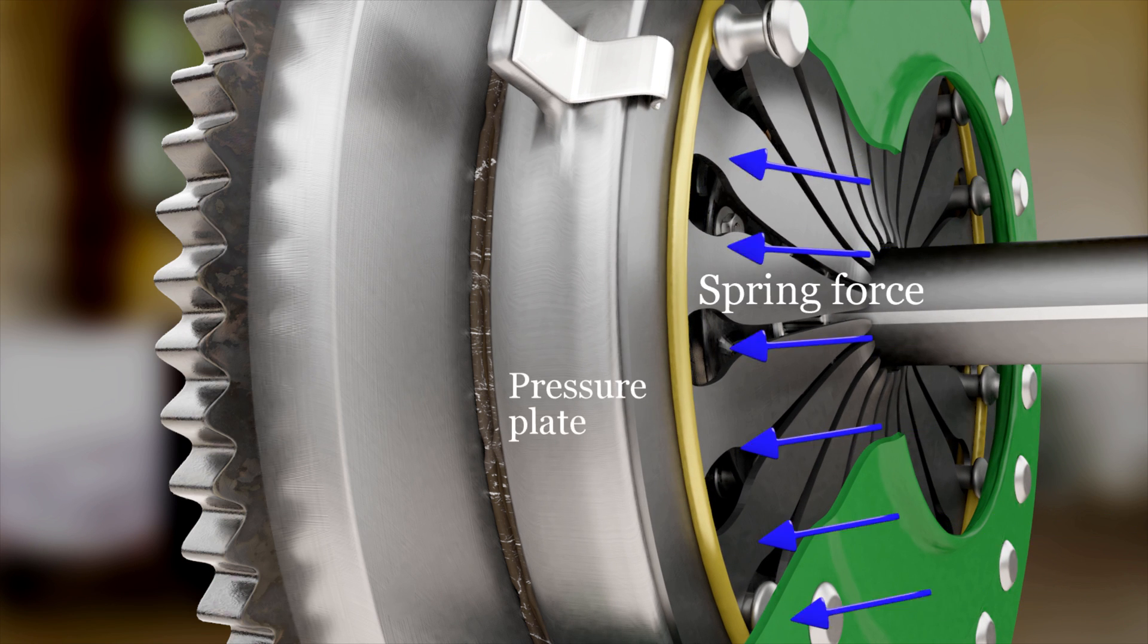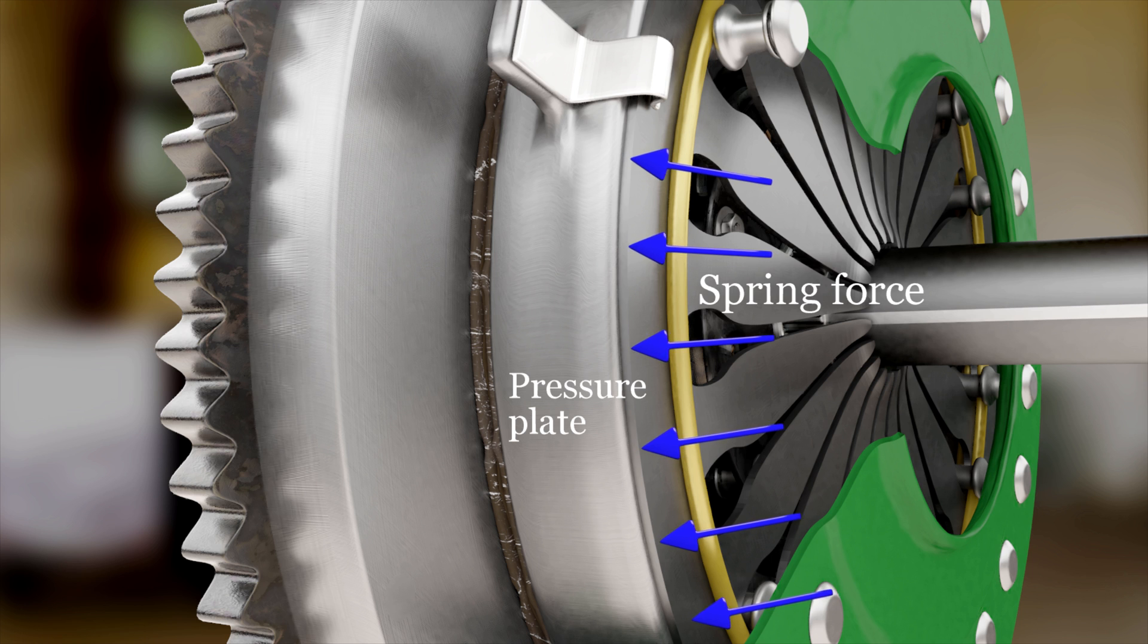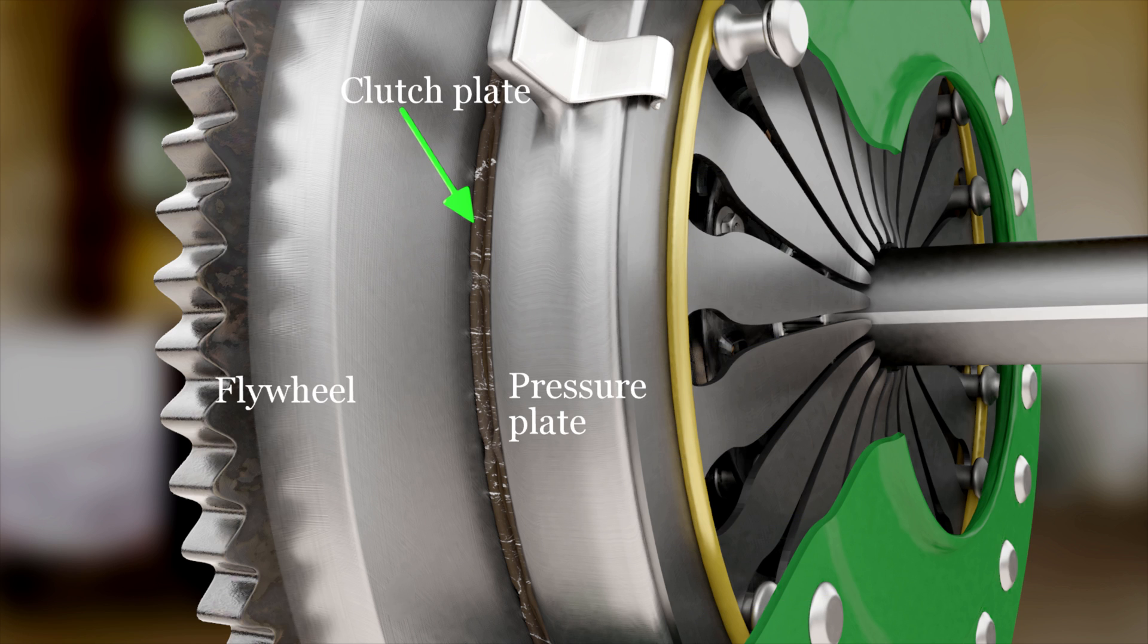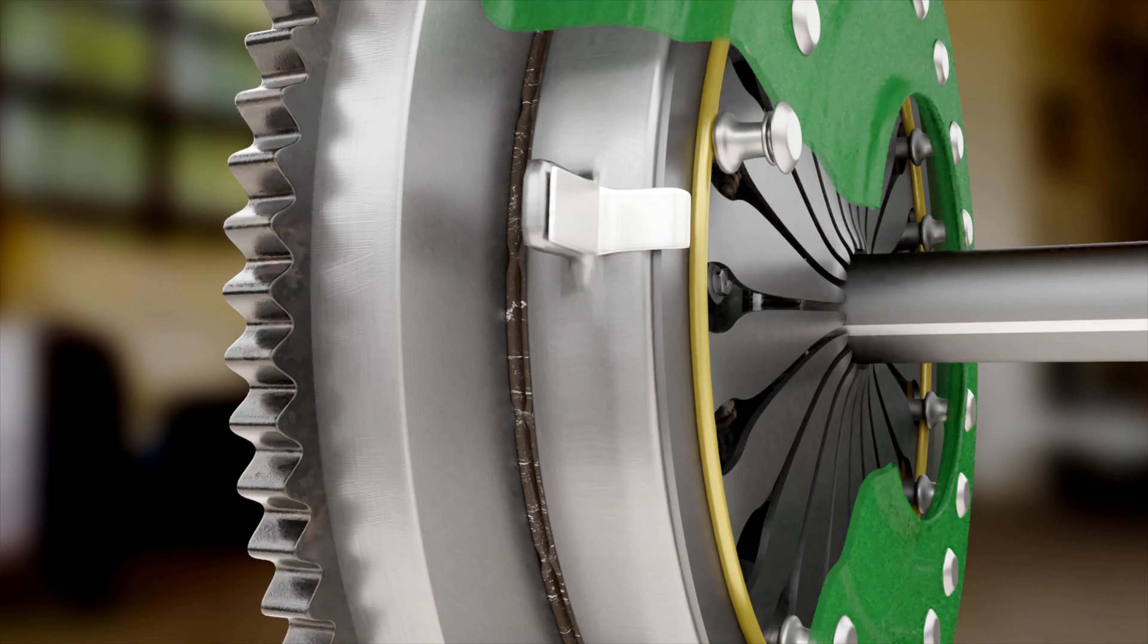And spring force starts acting on the pressure plate. And due to this spring force, the pressure plate presses the clutch plate against the flywheel. And thus, the clutch plate rotates due to frictional force acting on its both surfaces.